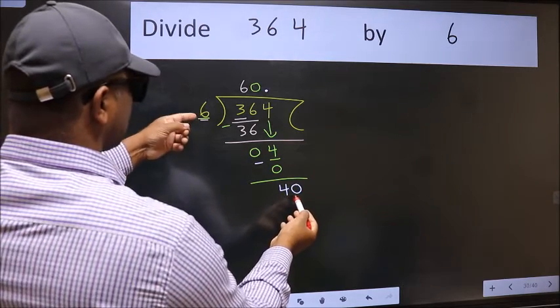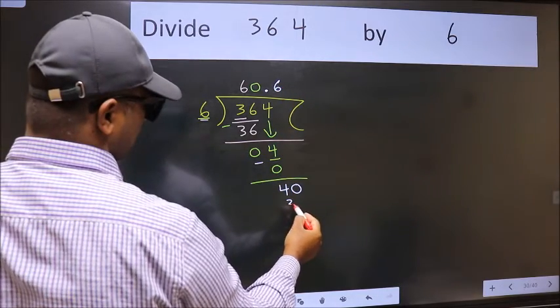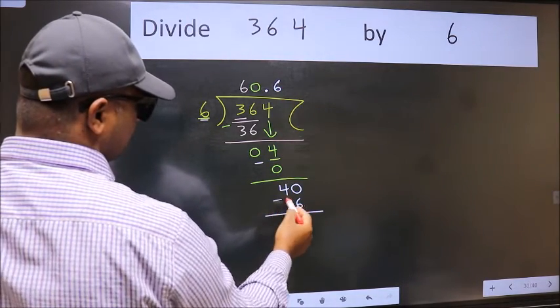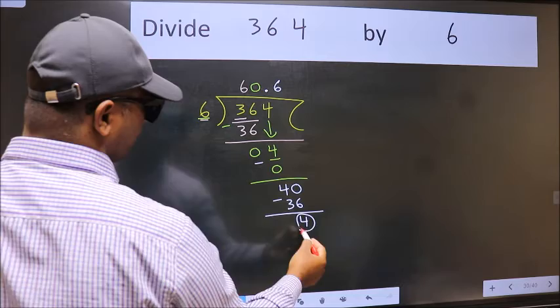So 40. A number close to 40 in the 6 table is 6 times 6 equals 36. Now we subtract and got 4 again.